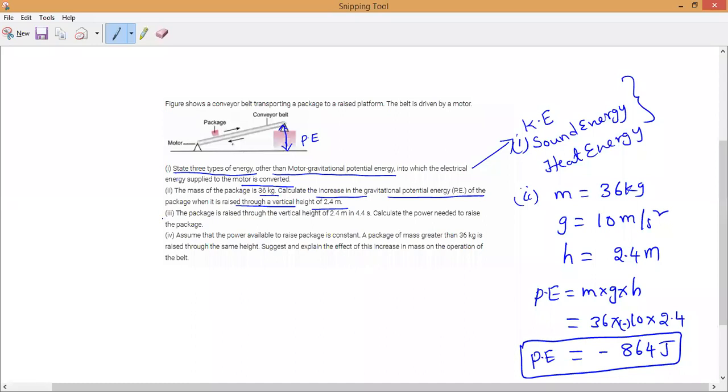Now this is the second question. The third question: the package is raised through a vertical height of 2.4 m in 4.4 seconds. Calculate the power needed to raise the package. So what is the power formula? Power equals work done divided by time. In this case, potential energy by time, which is mgh by time. We calculated it just now. So mgh is 864 divided by 4.4, which equals 196.3. So this is the answer.